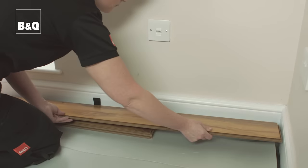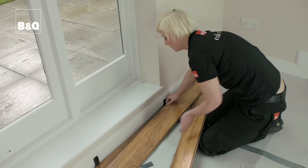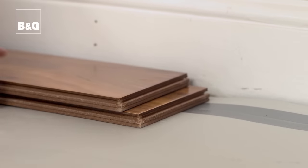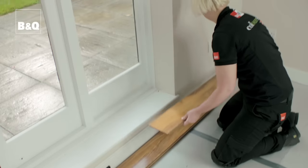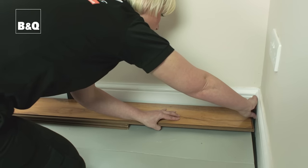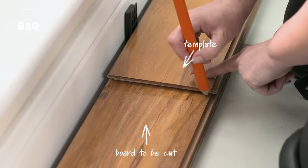To work out exactly the correct size for the last board of the row, lay it directly on top of the last board you laid. Then take a third board and use it as a template. Press it snugly up against the wall, and with an expansion spacer in place, use the other end of the board as a template, and mark the board you're going to cut with a pencil.